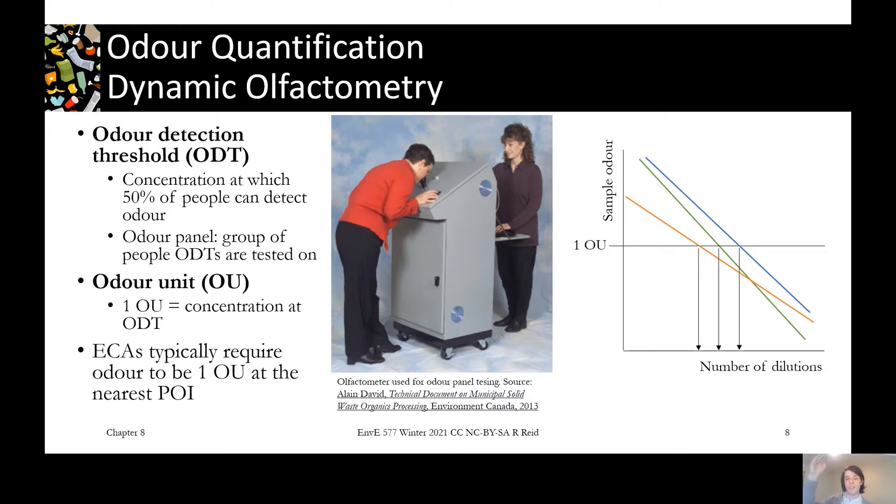If you go above the odour detection threshold, you'll be saying yeah, I can definitely smell something. If you go below, you're saying I don't think I smell anything. As you go much higher or much lower, the smell will get stronger and stronger or less and less detectable.